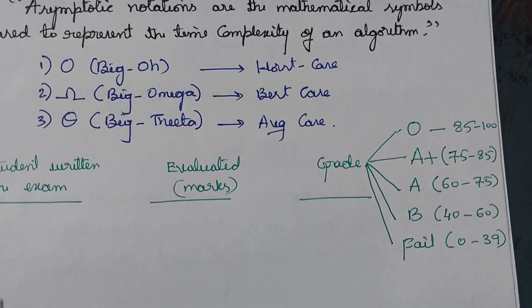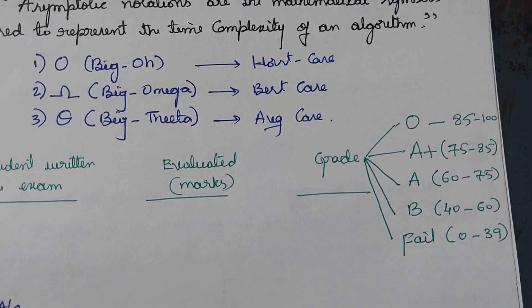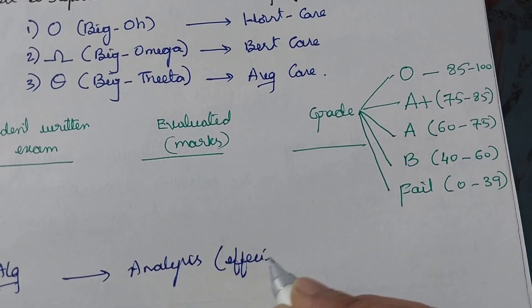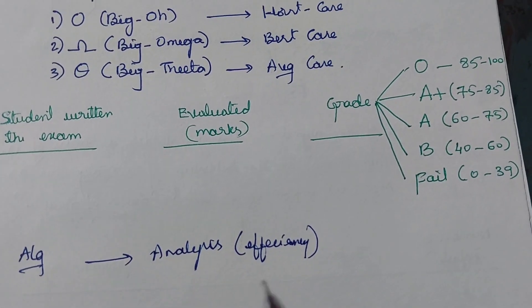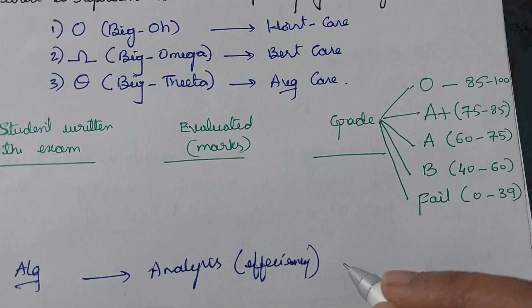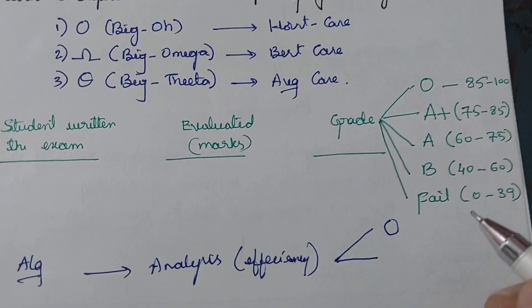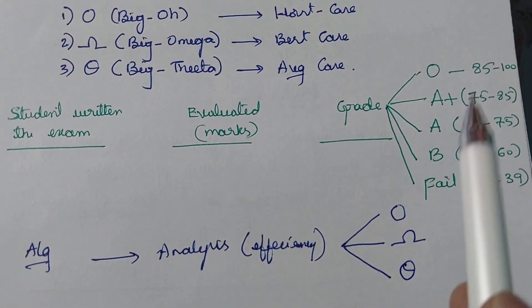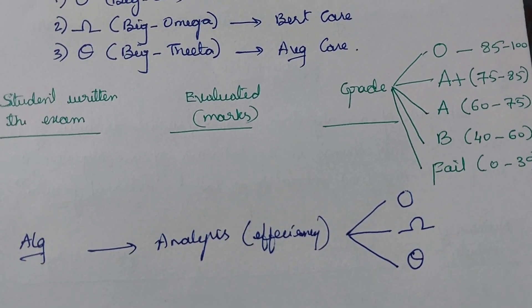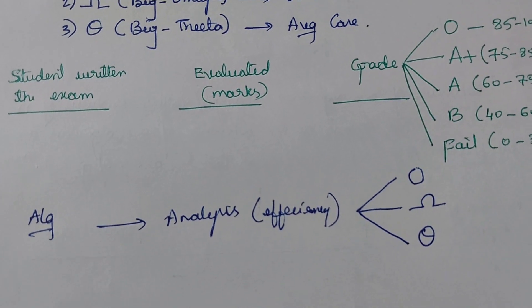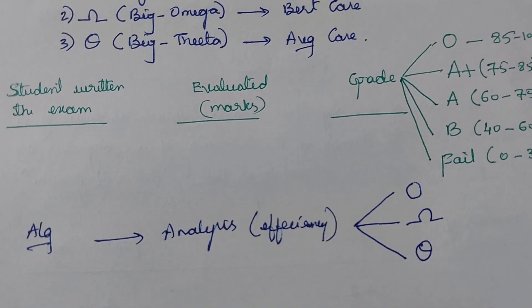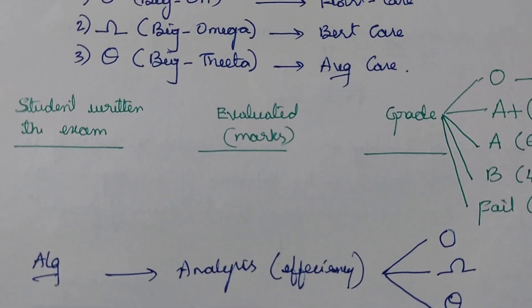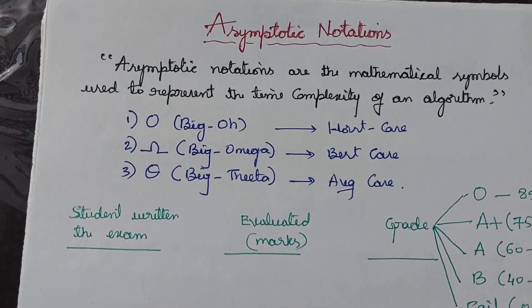Similarly, first we write the algorithm, then we do analysis to know the efficiency of that algorithm. Once we find the efficiency, we need to decide whether that algorithm suits the worst case, best case, or average case. Just like we give a rank or grade to students, we also need to rank the algorithms.